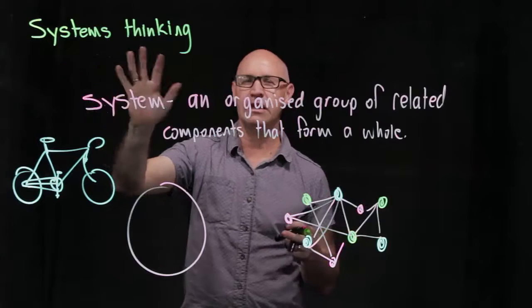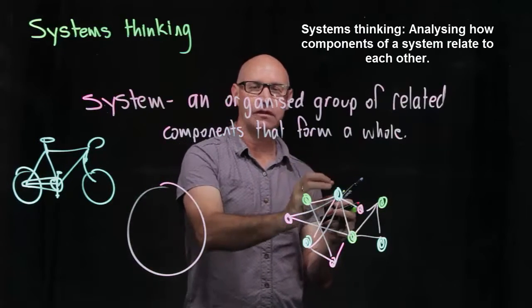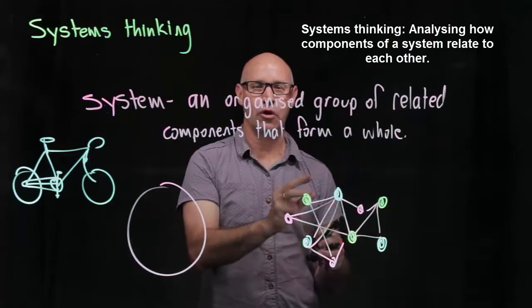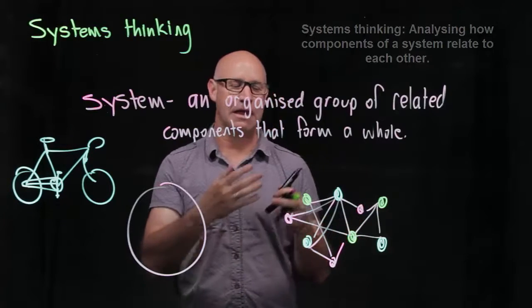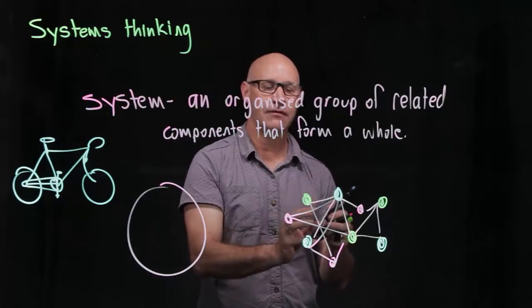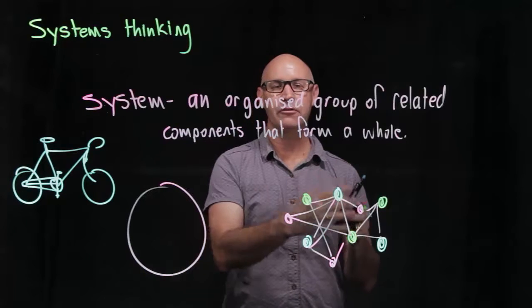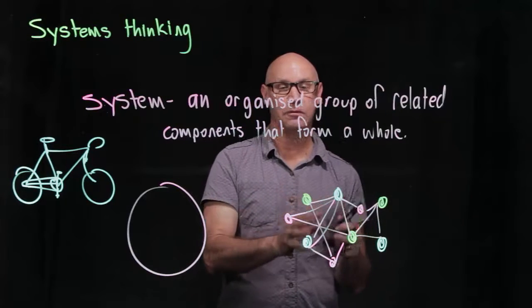So systems thinking is about understanding how different components of a system work together. And importantly, by making a change to one part of a system it can actually have an impact on other parts of the system quite removed from where the change was made.